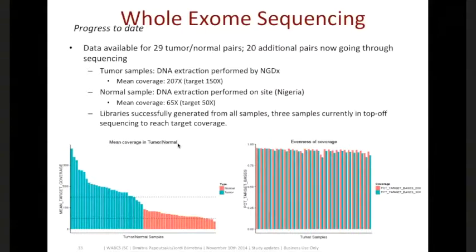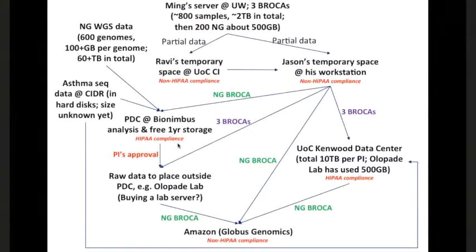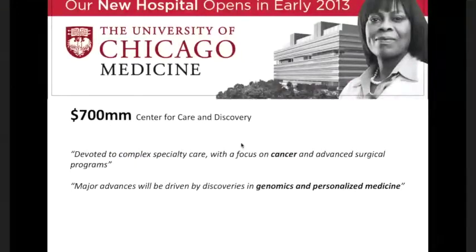Let me end by saying that when we started this collaboration, our data was in 10 different places across multiple collaborations. We keep asking Ravi Madhuri and people at the Computational Institute to help us move our data so we can actually get our hands on it. There's a Mink server at the University of Washington, Ravi's temporary server at the CI, BioNimbus, data from asthma studies, a data center in Kenwood — all of this is mind-boggling. But with the support of the cloud resources we have here, we're going to get there. The hospital is investing $700 million for care and discovery, devoted to complex specialty care with a focus on cancer and advanced surgical programs, and major advances will be driven by discoveries in genomic and personalized medicine.